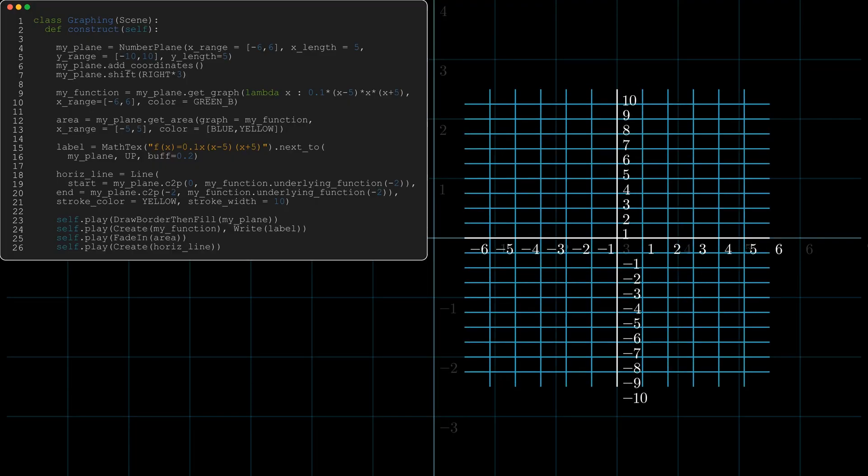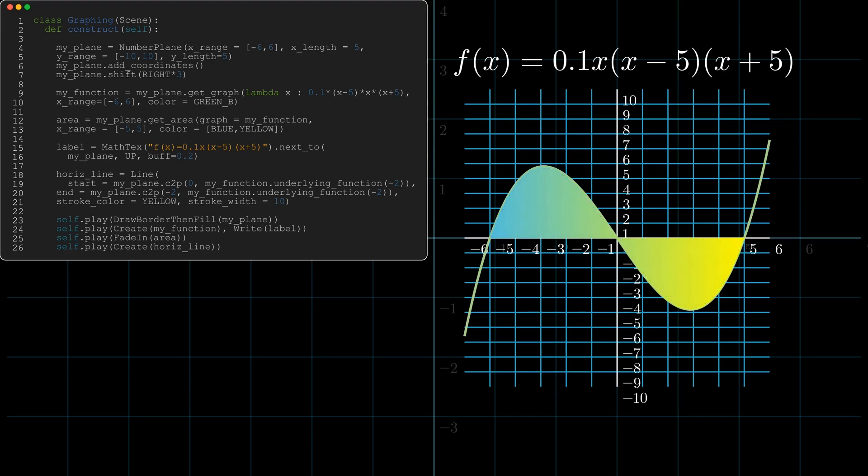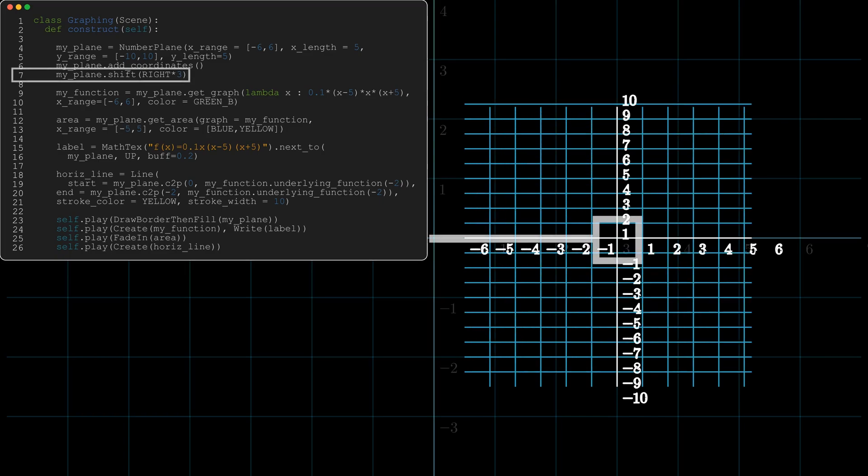Again, pause it, read the code, look at where it's supposed to be on the axis, and then watch how it plays out. As a final point for this animation, notice how I've got the plane and I've shifted it to the right three units. That's exactly where it's sitting with respect to the background plane.